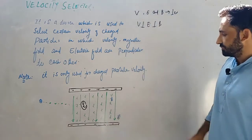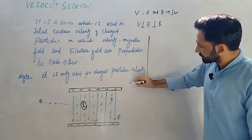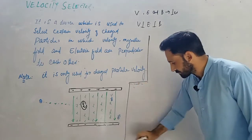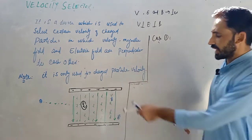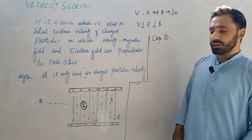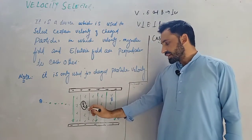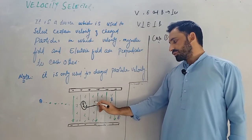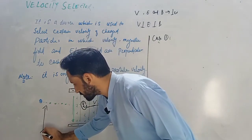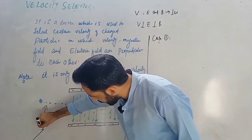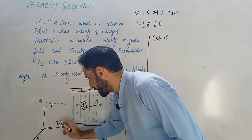Now there are 3 cases. Case number one: electric force is greater than magnetic force. Here we have an electric field in one direction and a magnetic field in another direction, with charged particles entering the region.